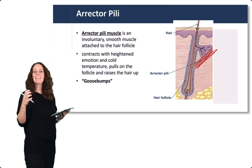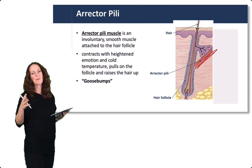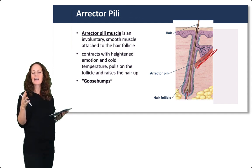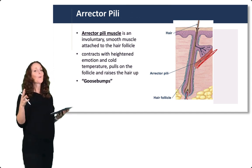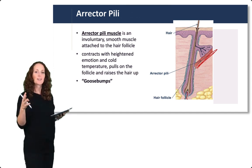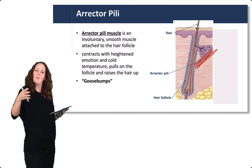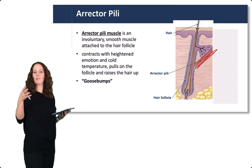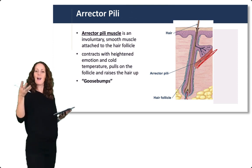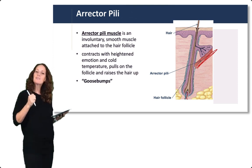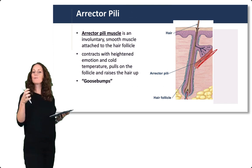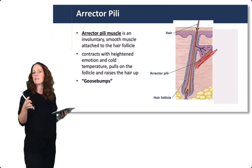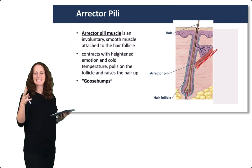The erector pili muscle is a smooth muscle that contracts with heightened emotion or cold temperature. It pulls on the follicle and raises the hair up. This is the tiny smooth muscle responsible for goose bumps when we get cold or when we get excited.